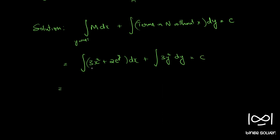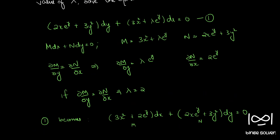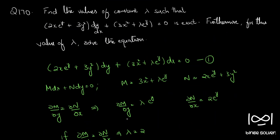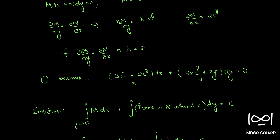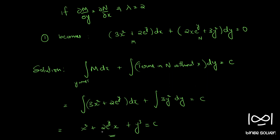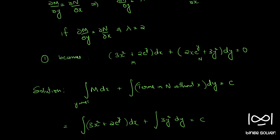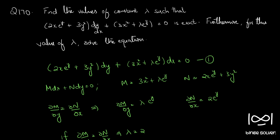This gives x³ (since integral of 3x² is x³) plus 2e^y · x plus y³ = c. So the final solution is x³ + y³ + 2xe^y = c. This is the solution to question number 170: lambda = 2, and using that value we get x³ + y³ + 2xe^y = c.